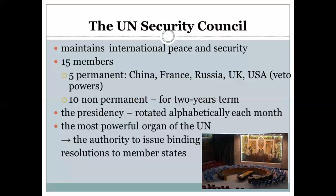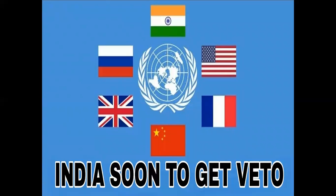The Security Council maintains international peace and security. It has five permanent members: China, France, Russia, UK, and USA — all of whom have veto power. Veto power means that if any one of these five nations says no, the decision cannot be finalized. Non-permanent members are chosen for two years, also alphabetically. If a non-permanent member says no, it does not matter, but if a permanent member says no, the decision will not be passed. The presidency rotates alphabetically each month. India is also aspiring to gain veto power as a permanent member.